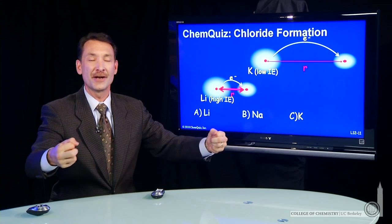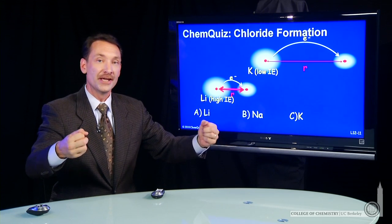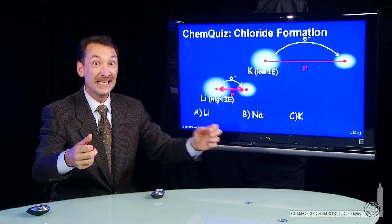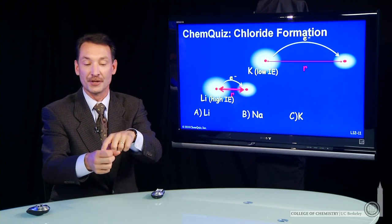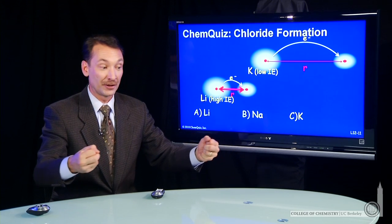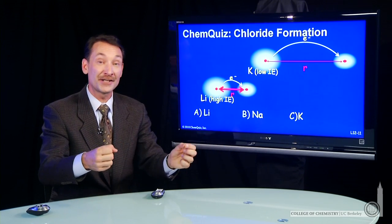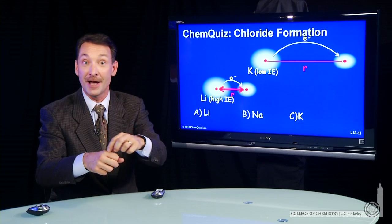If I'm far apart, I don't get as much energy released. So if I'm far apart, I need it to be easy to peel the electron off the sodium, potassium, or lithium. Whereas I get close together, I can peel electron off something that's less willing to give it up.